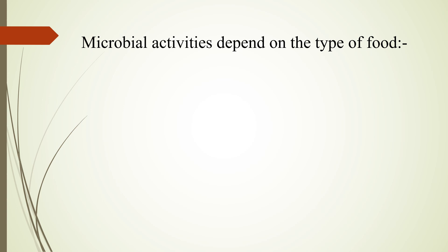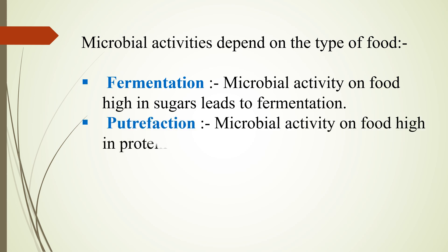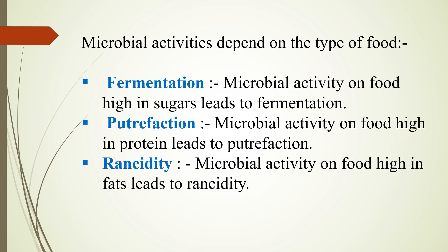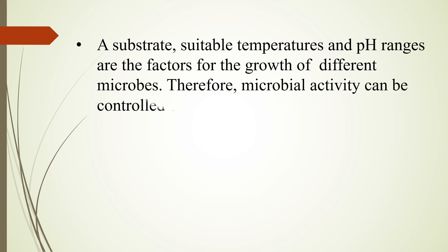There are special names for microbial activities depending on the type of food. Fermentation refers to microbial activity on food high in sugars. Putrefaction refers to microbial activity on food high in protein. Rancidity refers to microbial activity on food high in fats. In addition to moisture, a suitable substrate, temperature, and pH ranges are the factors for the growth of different microbes. Therefore, microbial activity can be controlled by controlling these factors.